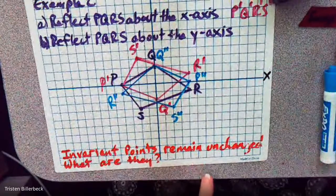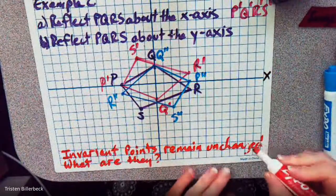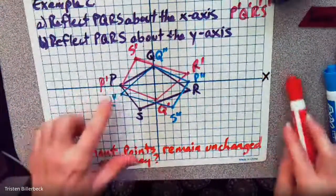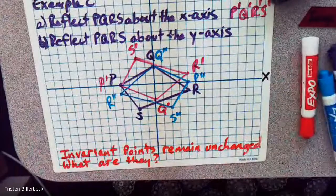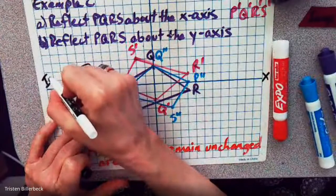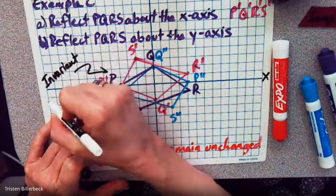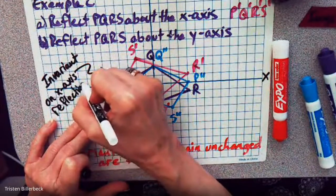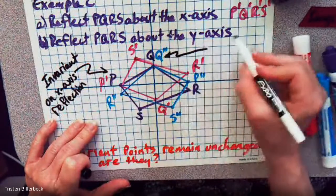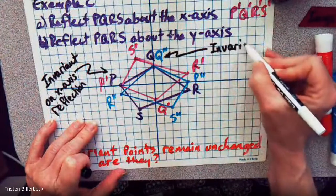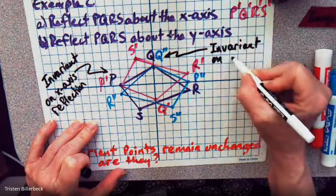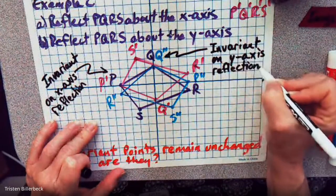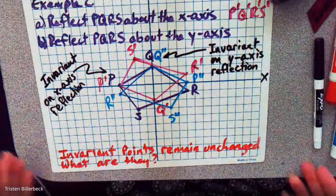The important thing to note here is that invariant points remain unchanged. P was the invariant point on the x-axis reflection because it was right on the axis. That's what makes a point invariant — if it's on the axis of reflection, it doesn't move.